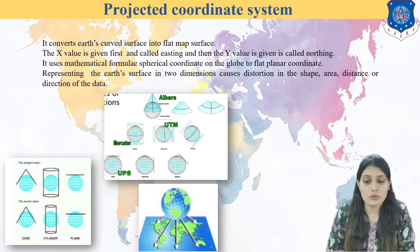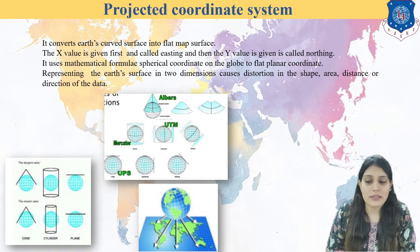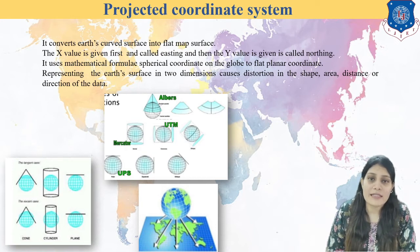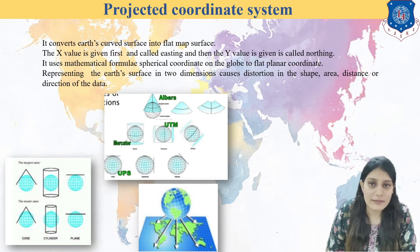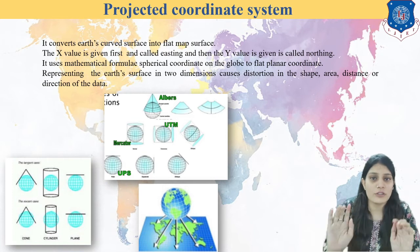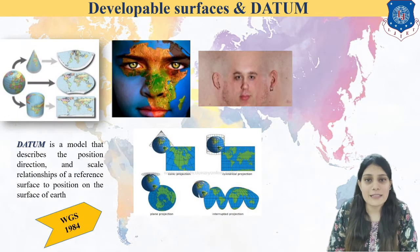We have X values and Y values — north, east, south, west — and we are representing the earth's surface from 3D to 2D. We are converting from the globe to the flat surface, and that is known as the projected coordinate system.